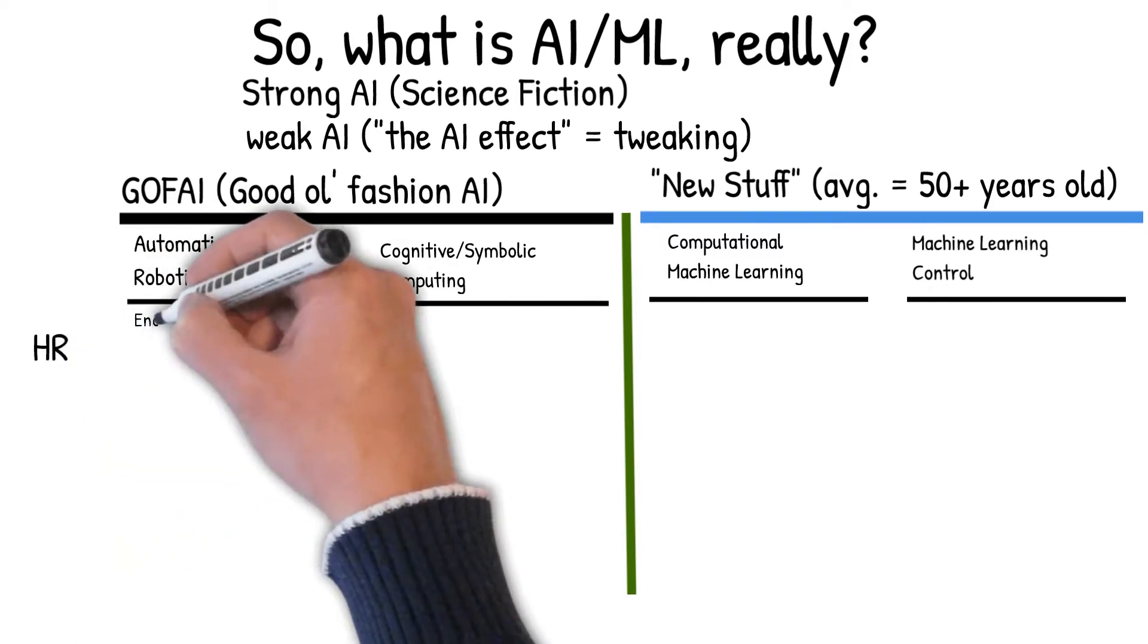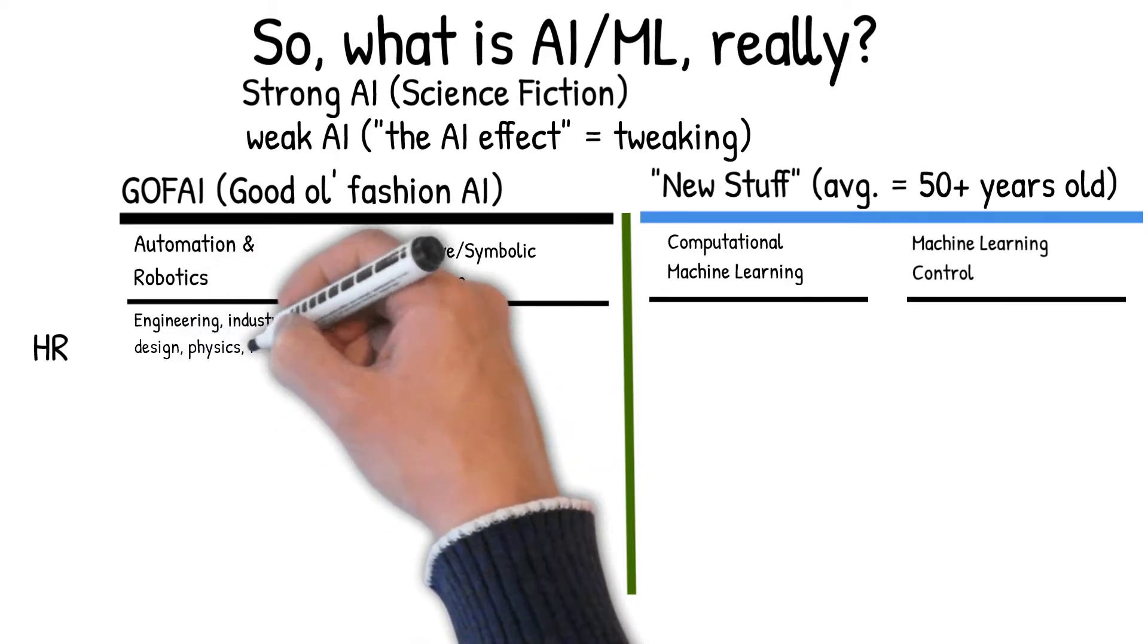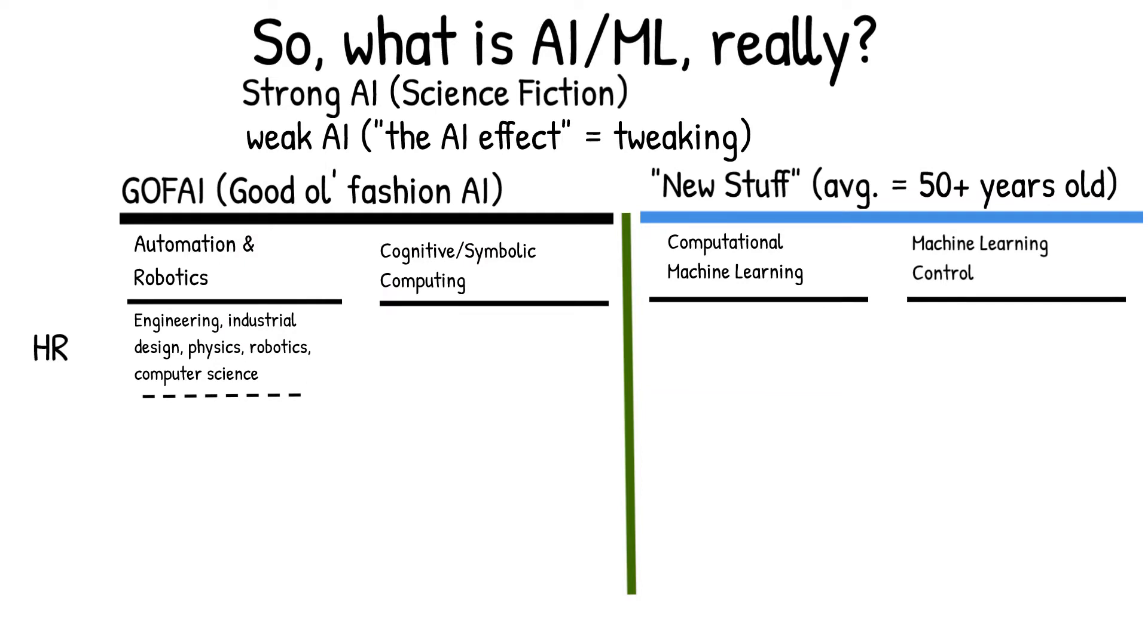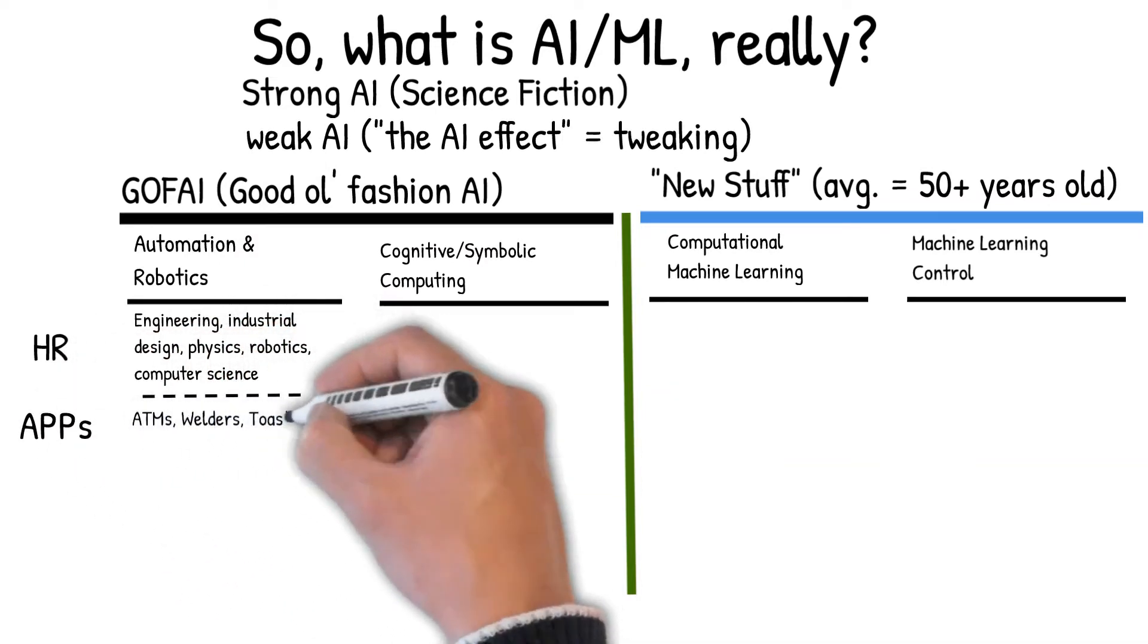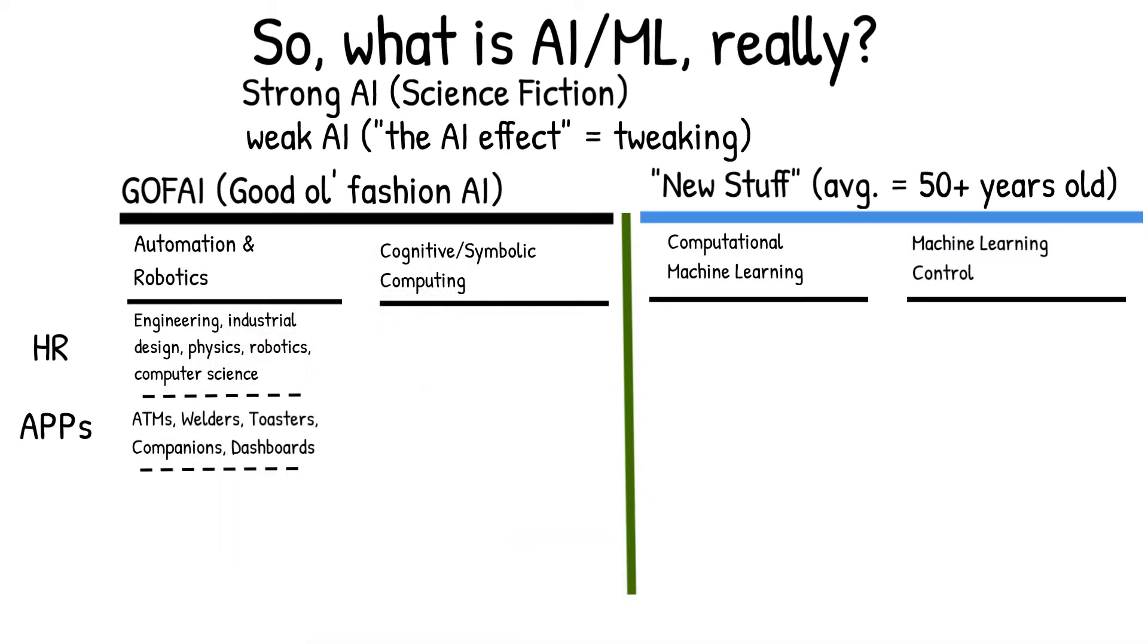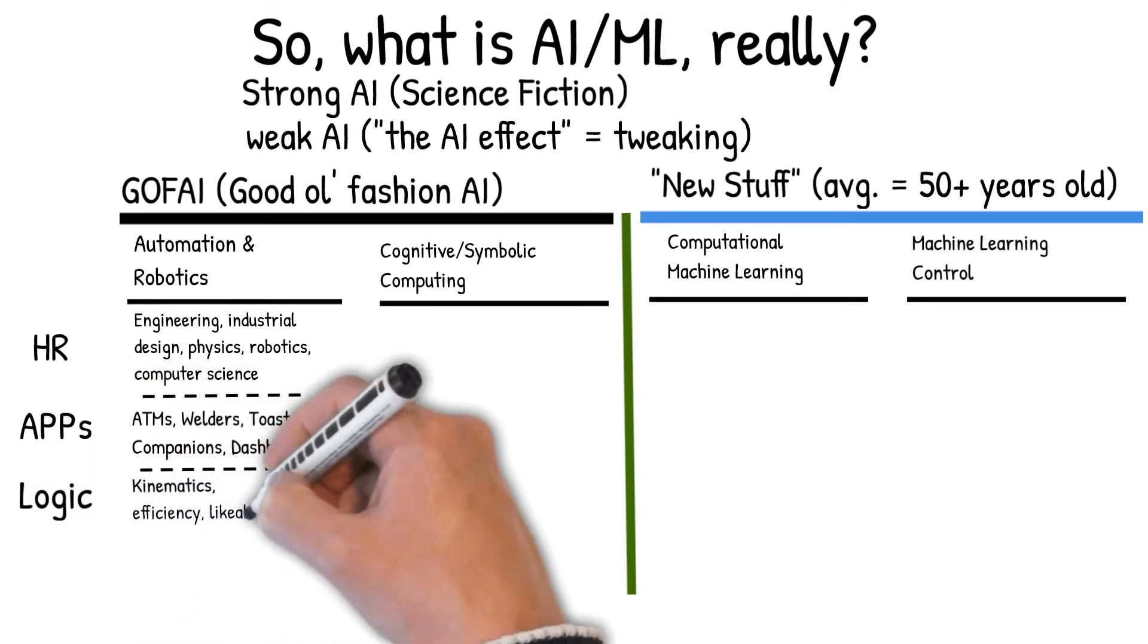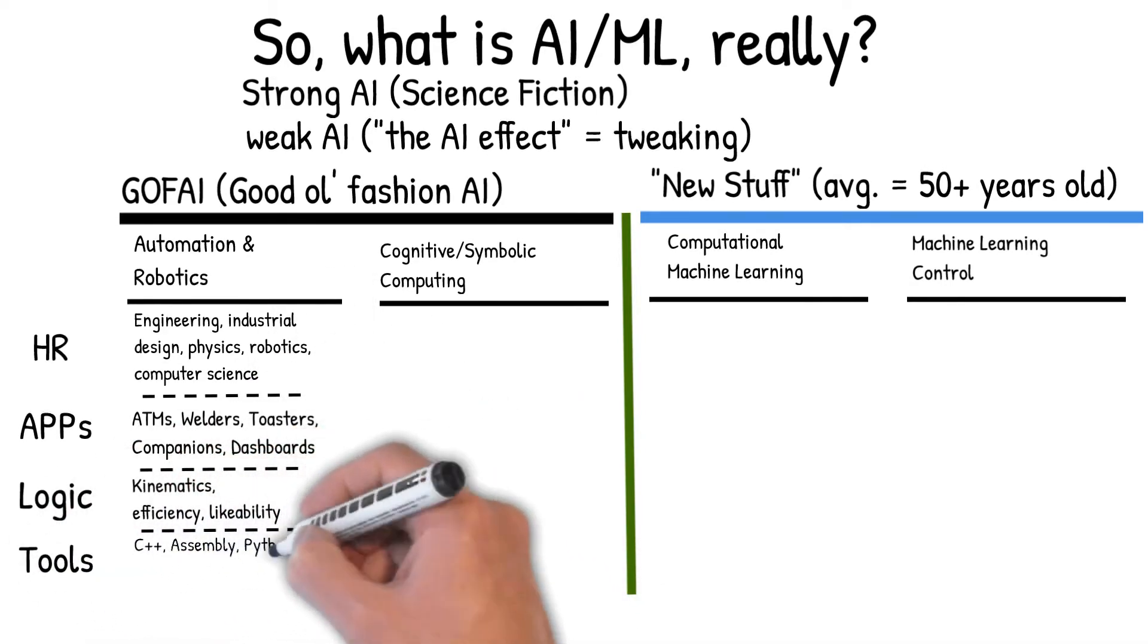Let's focus on robotics. From a human resources point of view, this is largely dominated by engineers, industrial designers, people with backgrounds in physics and robotics, but also in computer science. What they work on are machines that replace humans in one aspect of life or another, such as automatic teller machines or welding devices. The logic that these people use is largely based on physics, on efficiency, on likability, and they use a number of computer languages.